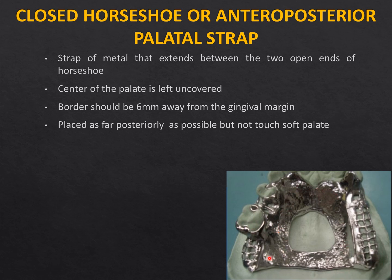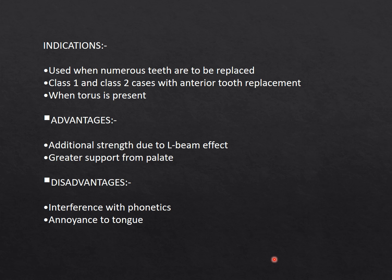The closed horseshoe design differs only in that a posterior palatal strap closes the design, creating a closed window. This is better than the open horseshoe, and the center of the palate is left uncovered — so a large inoperable torus can be accommodated. Borders should be 6 mm from gingival margins for maxillary and 3 mm for mandibular connectors. It is placed as far posteriorly as possible without touching the soft palate, to prevent gagging. This provides more rigidity and better indirect retention than the open horseshoe. Indications are Kennedy's Class 1, Class 2, and Class 4 when tori are present. Advantages include greater strength due to an I-beam shape effect.